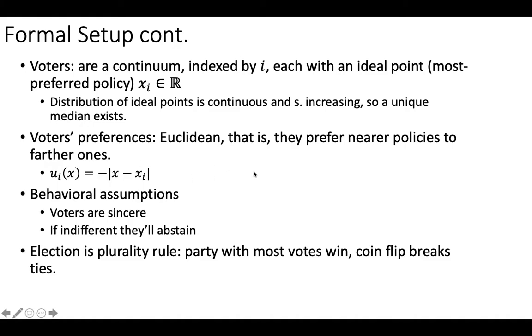The voters have Euclidean preferences, which just entails that they prefer nearer policies to farther ones. So their utility functions are the negative of the absolute value or just the distance between the chosen policy for when they're looking at a specific party. So this would be either XA or XB when they're trying to decide, and their ideal point. So this is going to be maximized at zero, right? And then it'll get more and more negative the farther away you are.